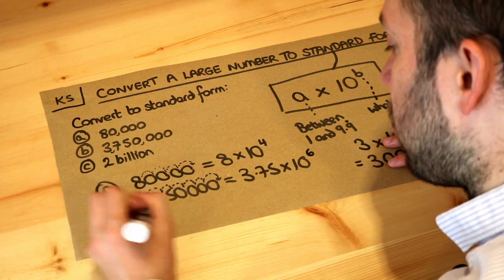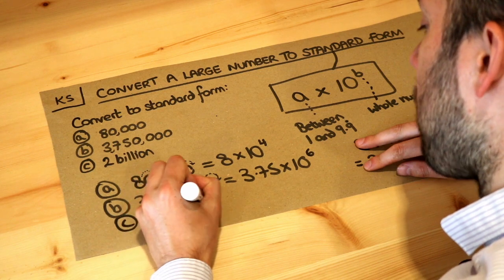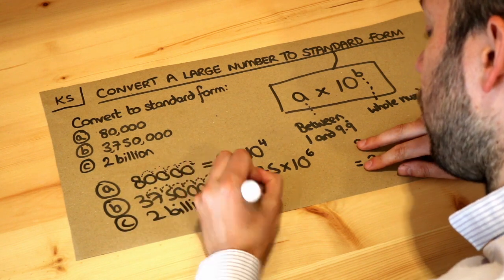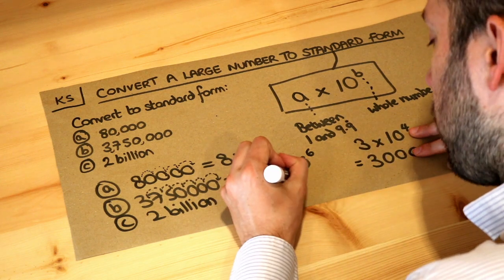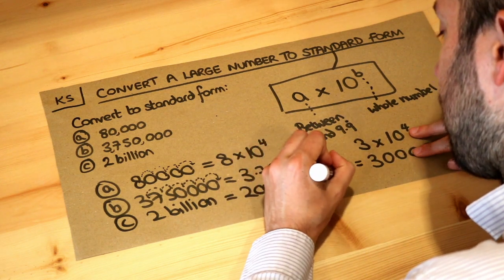Now what about 2 billion? Well, billion means a thousand million, so it's 2,000, and then million has six zeros: 1, 2, 3, 4, 5, 6.